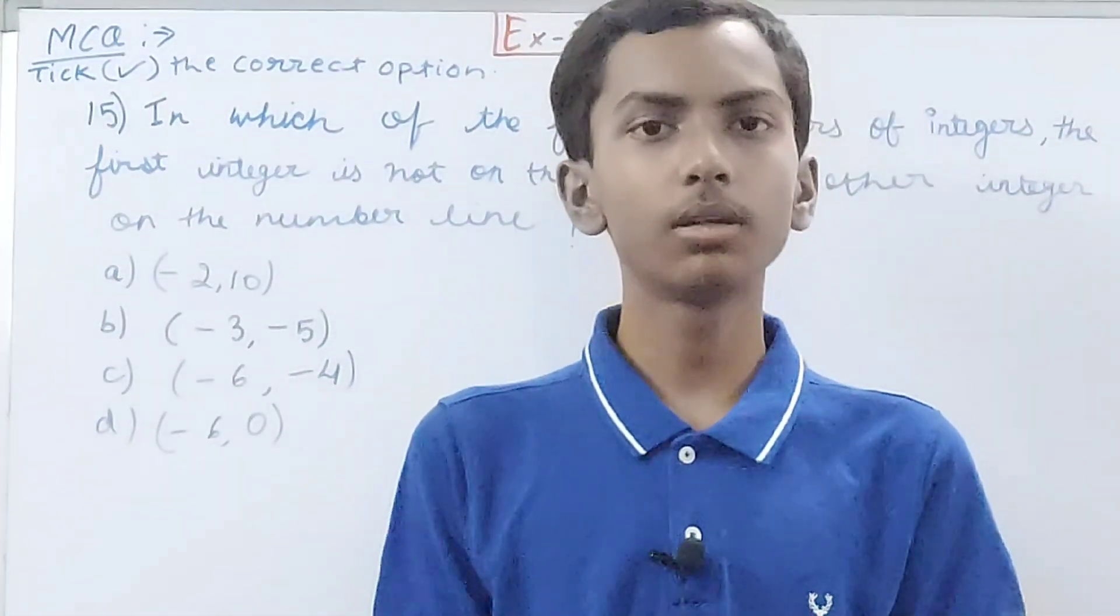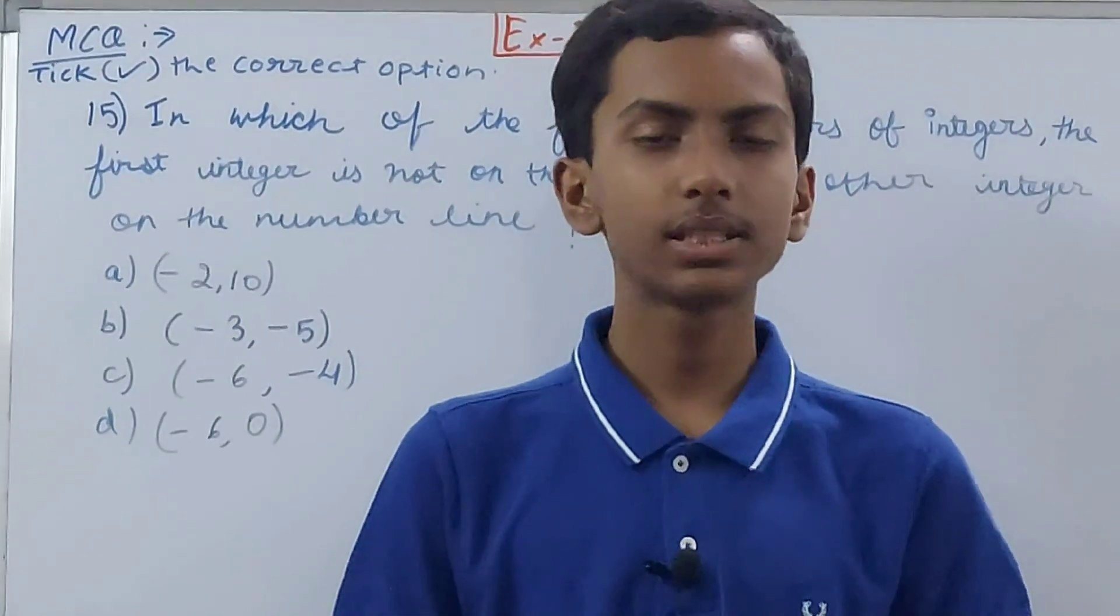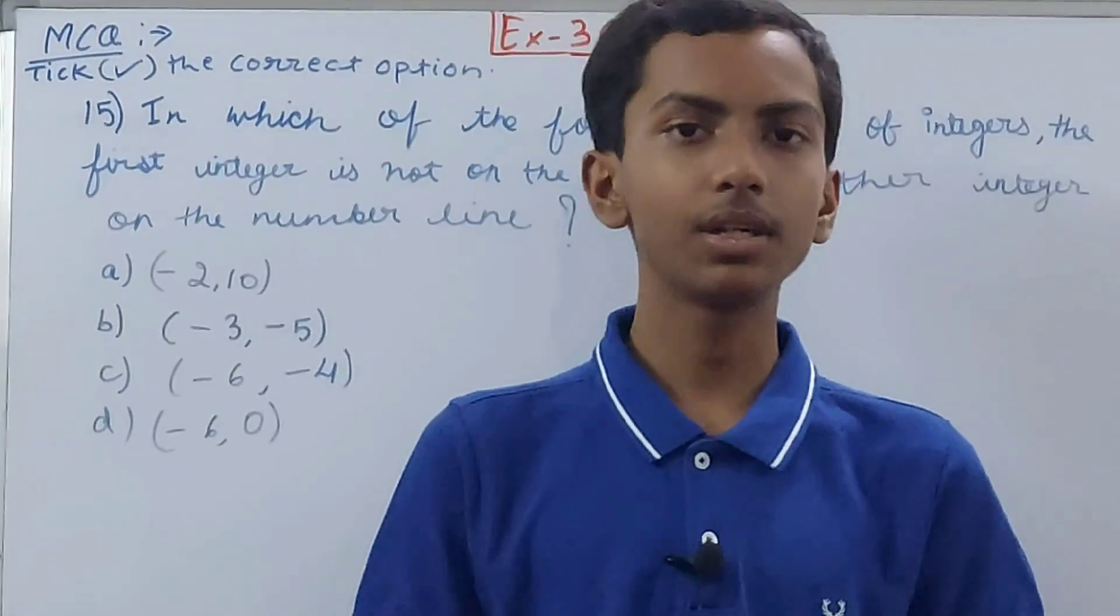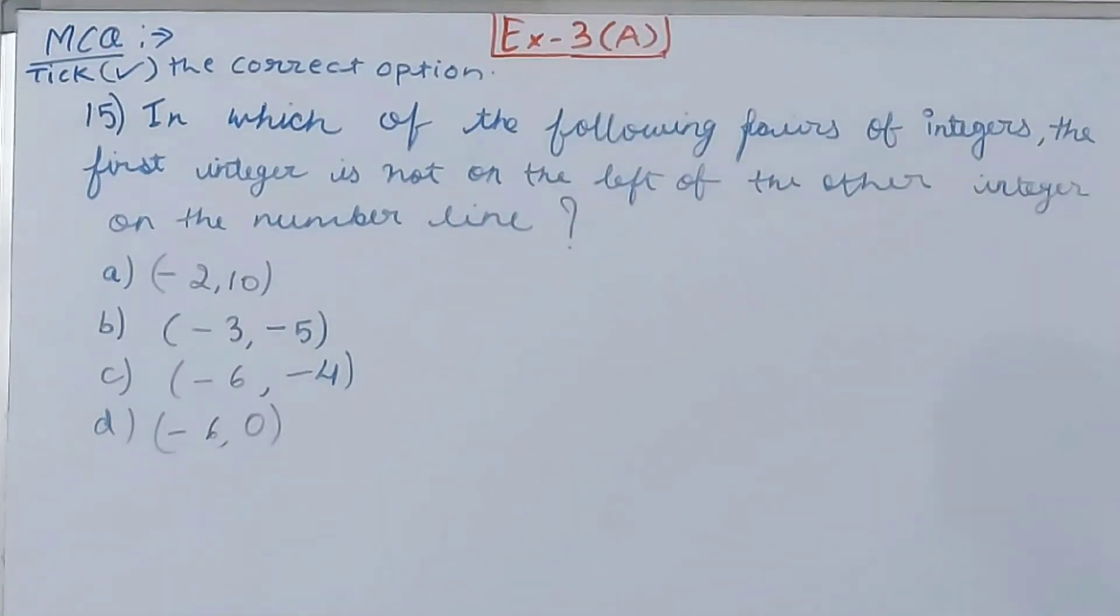Hello friends, welcome back to my YouTube channel Local Learning. In this video we are going to solve ICSE Mathematics Class 6 Chapter 3: Negative Numbers and Integers, Exercise 3A, Question Number 15. In which of the following pairs of integers is the first integer not on the left of the other integer on the number line?